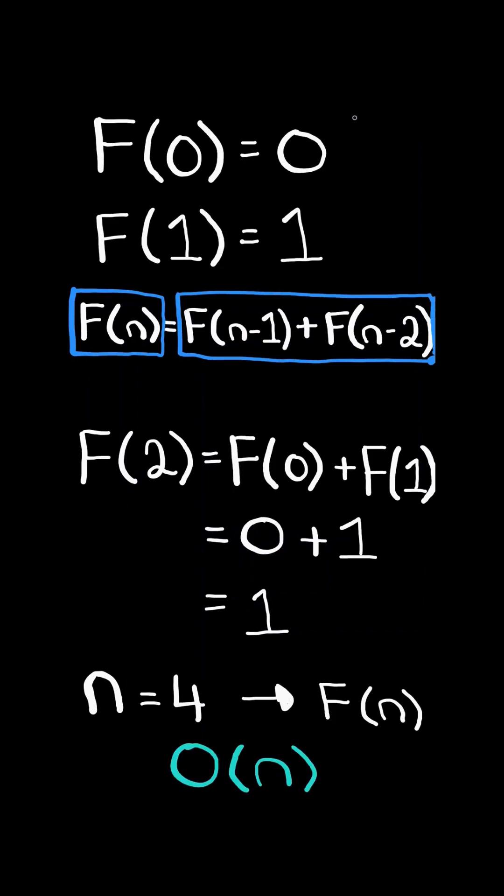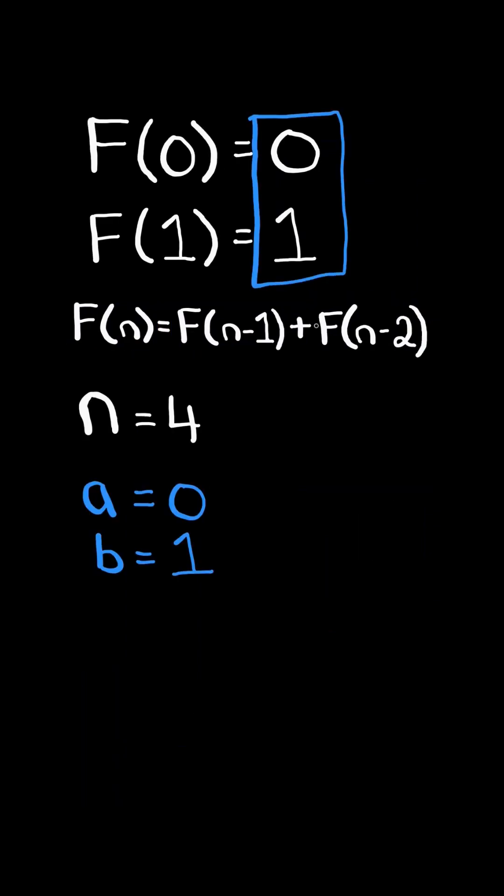We will solve this in O(n) time. The idea is to always keep track of the previous two numbers in the sequence in order to calculate the current number.